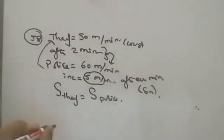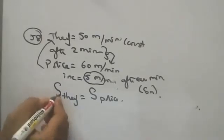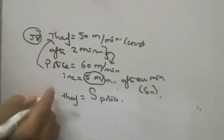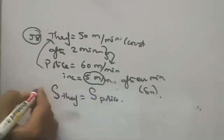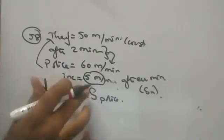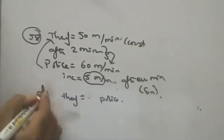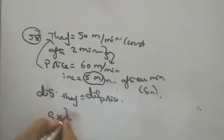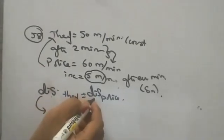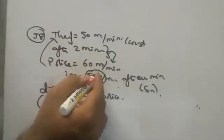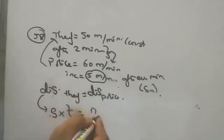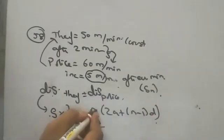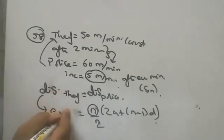We will use the sum of n terms today. The thief is going with constant speed, so distance equals speed into time. Because the police is increasing speed at a constant rate of 5 meters per minute, that distance will be an AP. So we use the AP total formula: Sₙ = n/2 × (2a + (n−1)d). Here we are taking time as n for both.